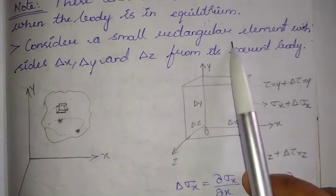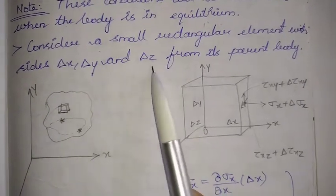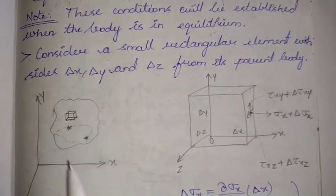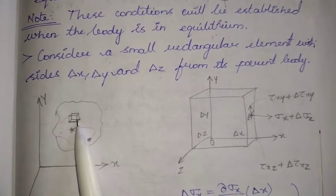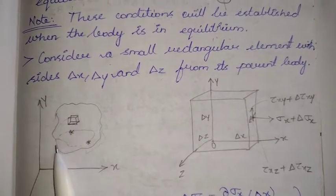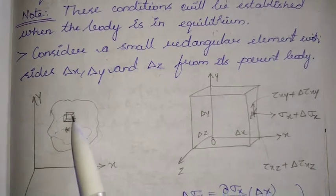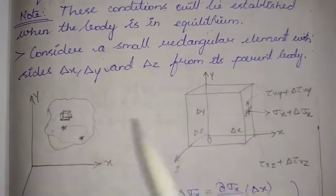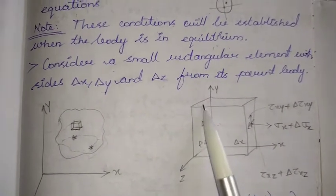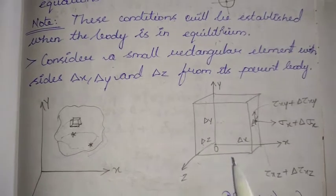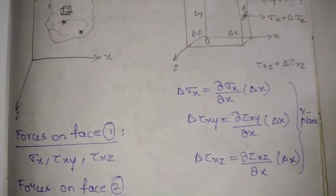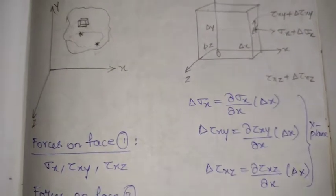Let us see the derivation. We are considering a small rectangular element with sides del x, del y, and del z, taken from its parent body. The parent body is the larger body in the x and y axis, and from it we take this small element. The sides are del x, del y, del z in the x, y, and z axes respectively.